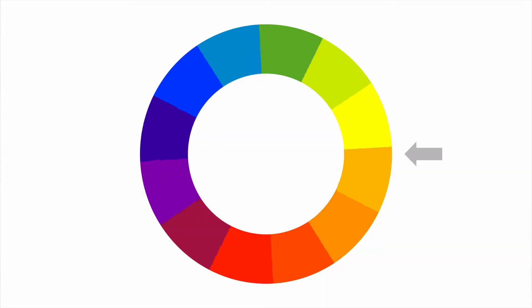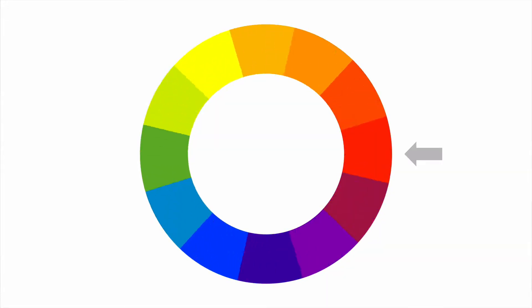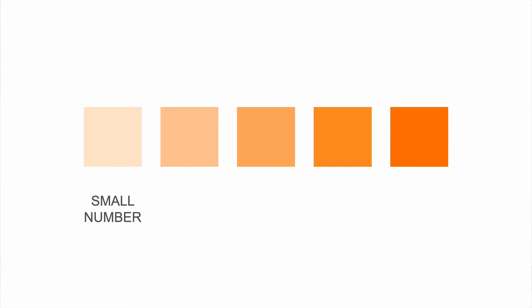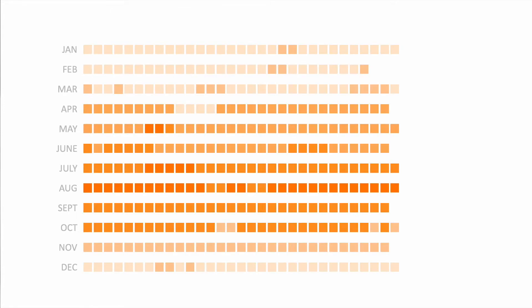Sequential. When you have data values that go from low to high, you need to stick with sequential colour palettes. Here you choose one colour or hue and use a gradient of that colour. The one rule you have to follow is that light colours represent small numbers and darker colours represent larger numbers. Used right, sequential colour palettes create numeric meaning — when we look at a data visualisation like this, we immediately get an idea of what the data is showing without any numbers, key, or description.